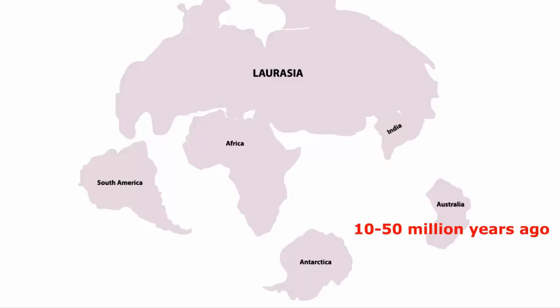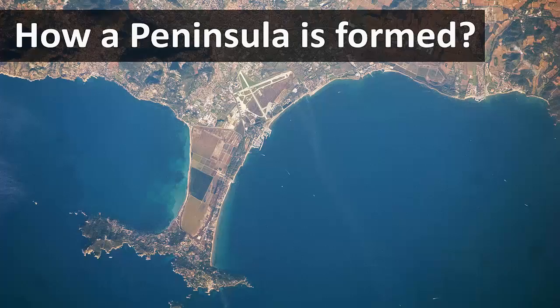A good example is the Indian subcontinent which broke away from Madagascar but together, they were part of the ancient continent of Gondwana. Anyhow, so that is how a peninsula is formed.